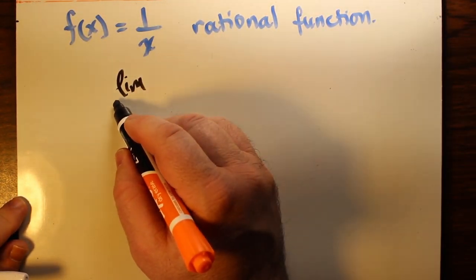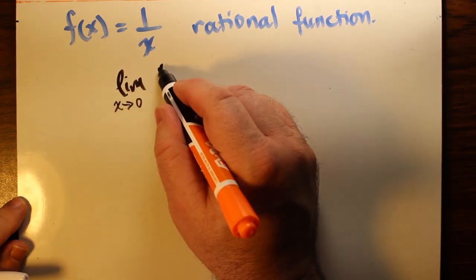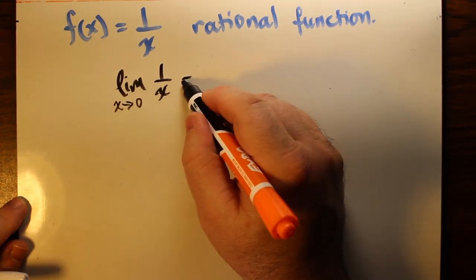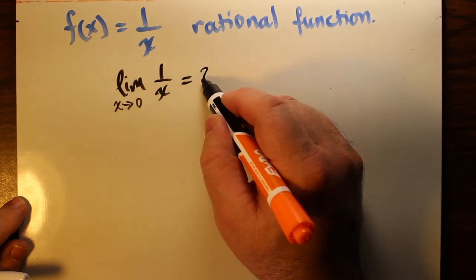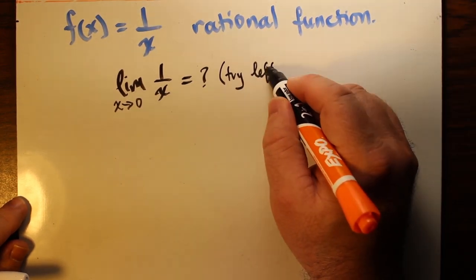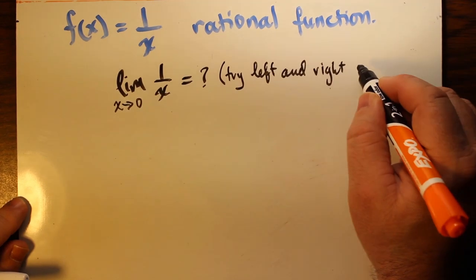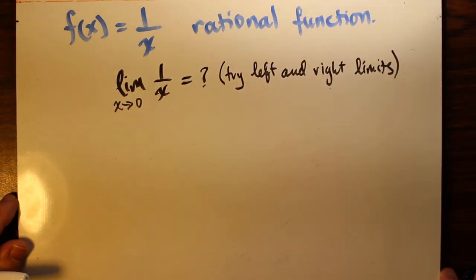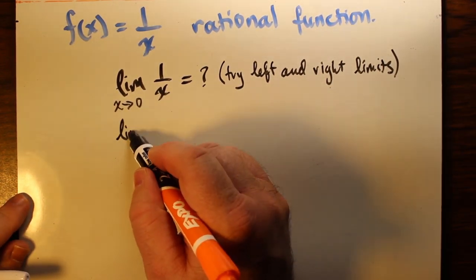Limits are defined as a number which is super close to the target we want. The limit x arrow zero notation means the limit as x approaches zero, which means we're trying to describe the behavior of the graph of the function as x gets super close to zero.